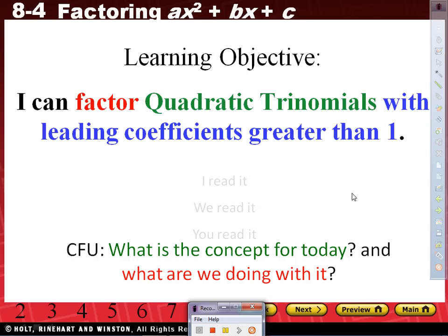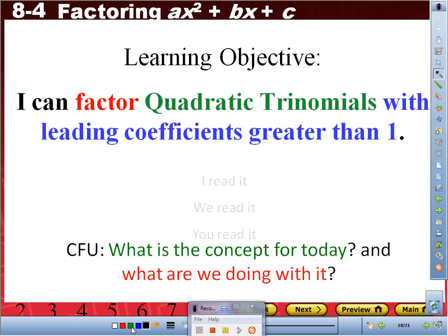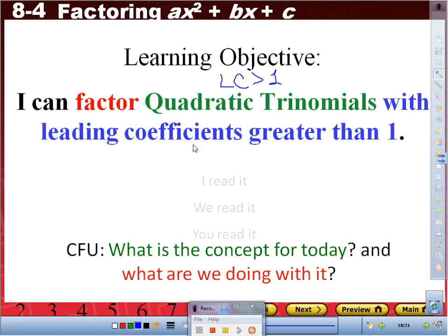Our objective: I can factor quadratic trinomials with leading coefficients greater than 1. Let's read it together. I can factor quadratic trinomials with leading coefficients greater than 1. For your title, you can write 'quadratic trinomials' and then write 'LC greater than 1,' so you know we're going to be factoring quadratic trinomials with leading coefficient greater than 1.